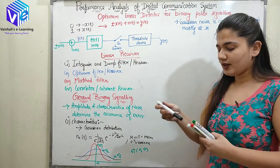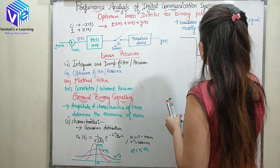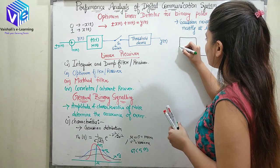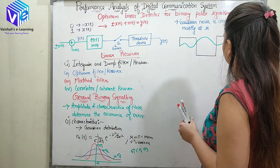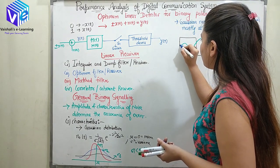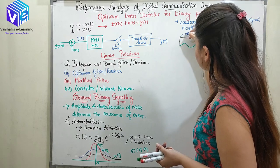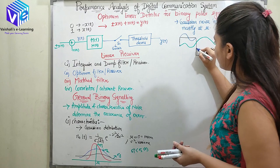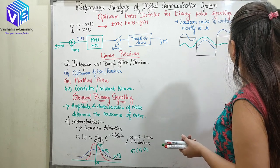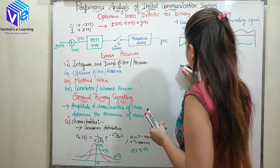For binary polar signaling: suppose this is my message signal, and there is noise added to this signal. At any particular instant, the noise is following the Gaussian distribution. Because of this noise, the amplitude would be shifting — when noise is added to the signal the received waveform gets distorted. The received signal's amplitude fluctuates around the transmitted values due to the added noise.